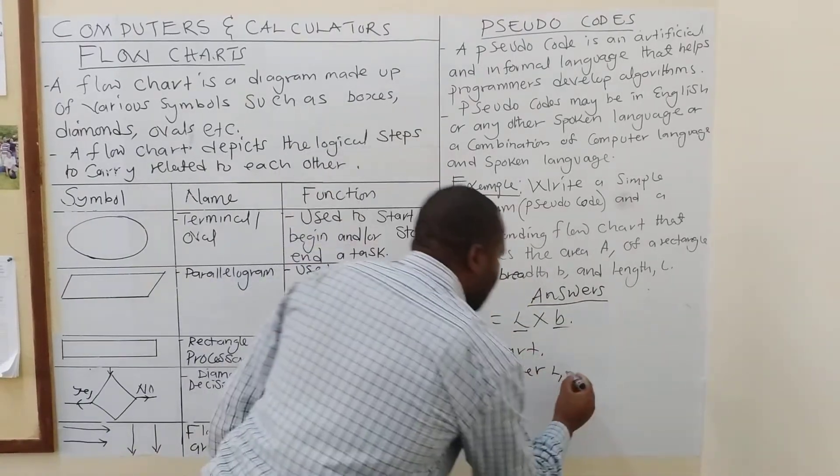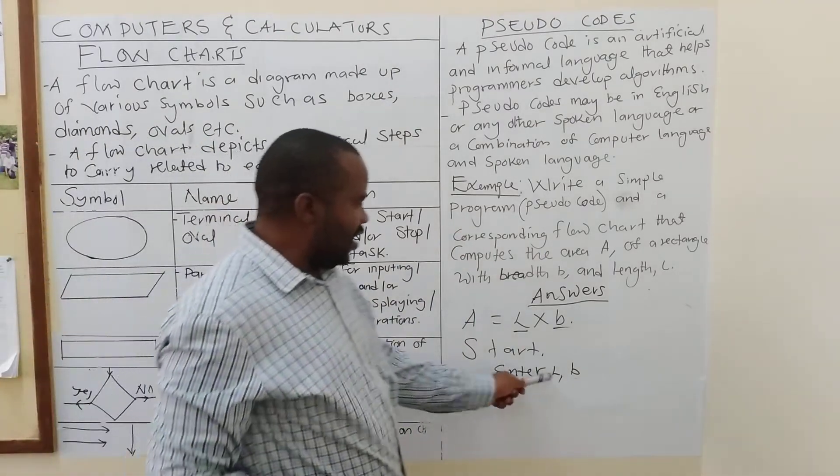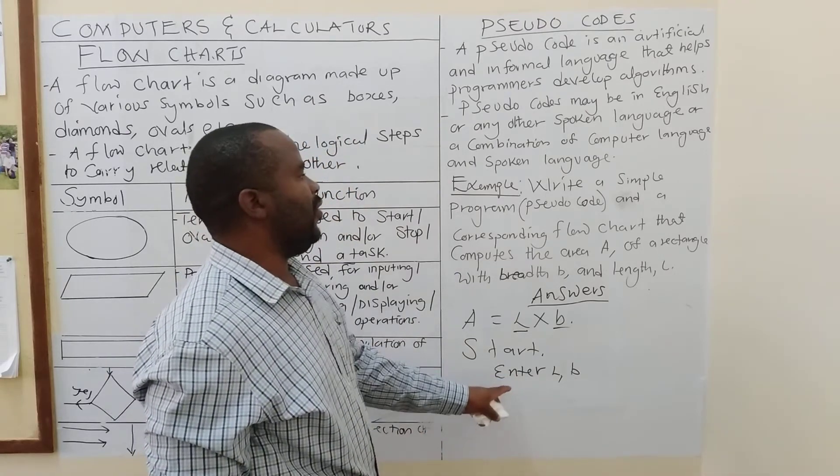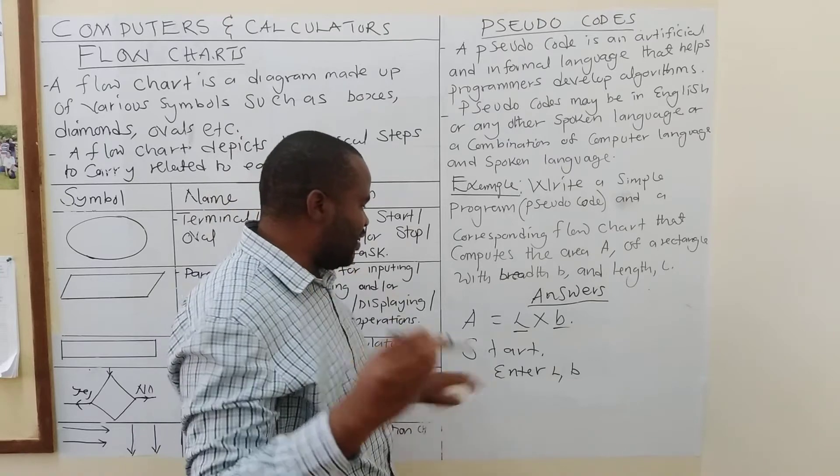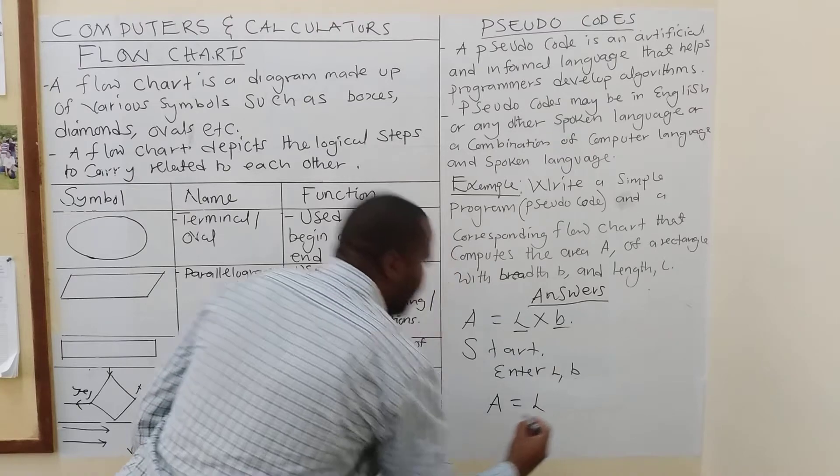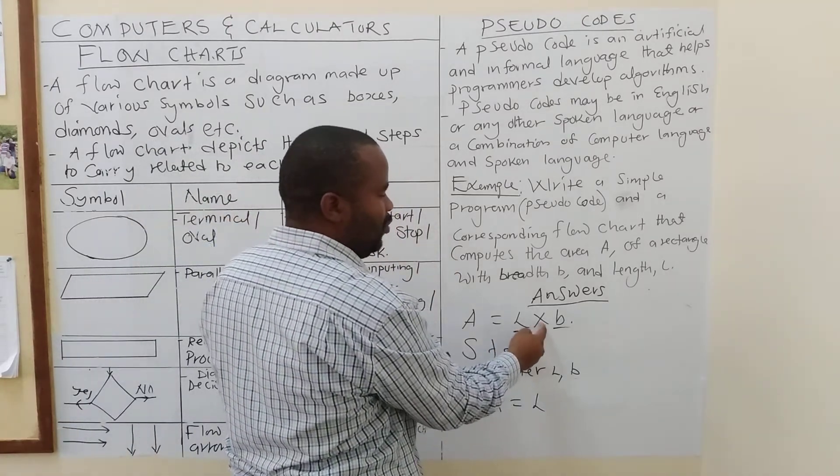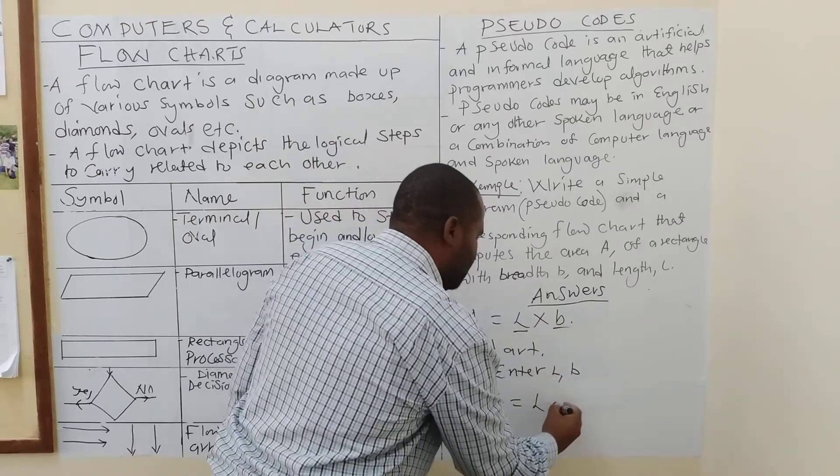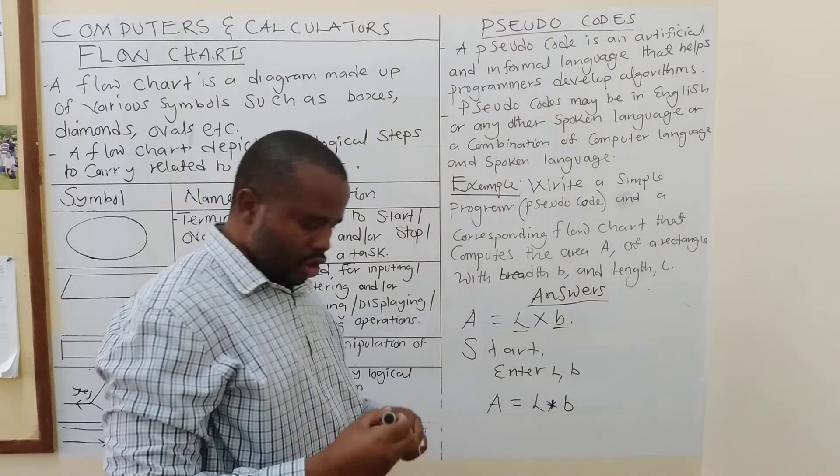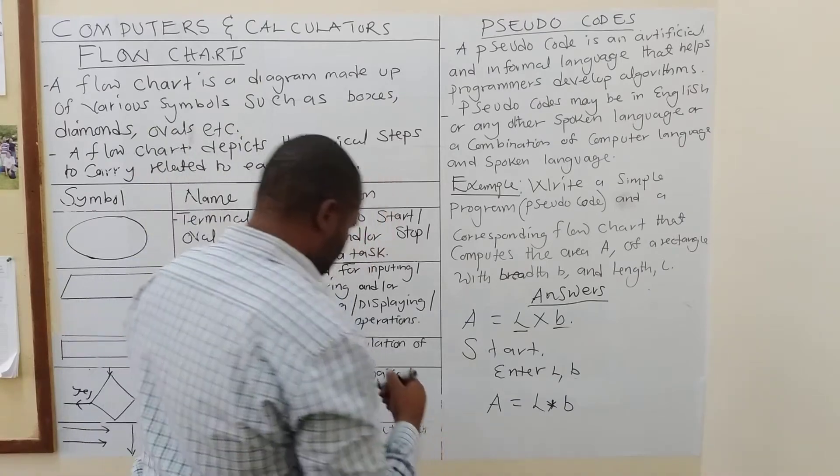So, you say, enter length, you enter breadth. So, once these things have been entered, what should happen? Then, you must calculate the area. How I'm going to calculate it, you must define. So, you are going to say, area is equal to L. Now, remember, this is the computer here. So, you may not write this multiplication as times. You put an asterisk.